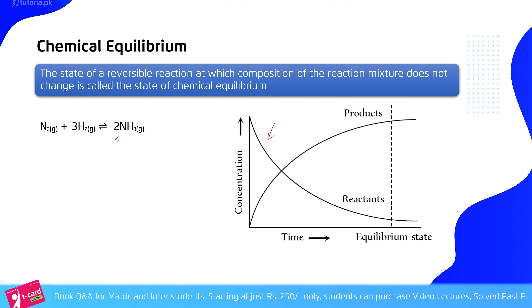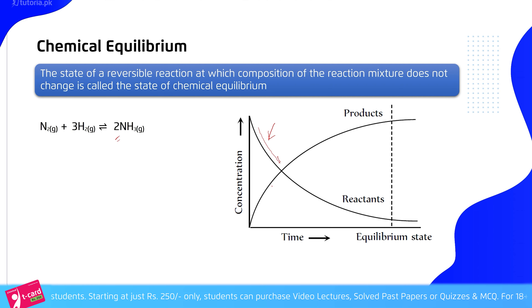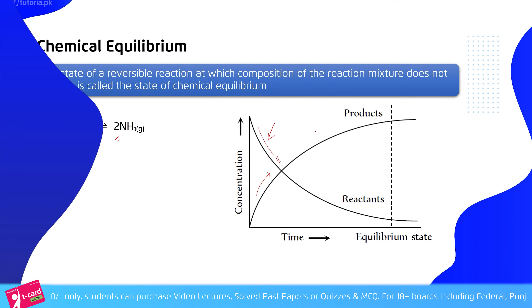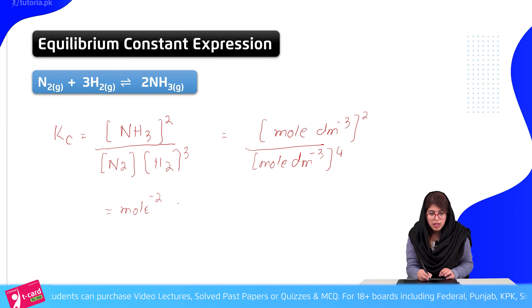We will look at how much reactant concentration there is, and how it is getting less over time. Similarly, how much product concentration is getting less over time for the particular reaction.